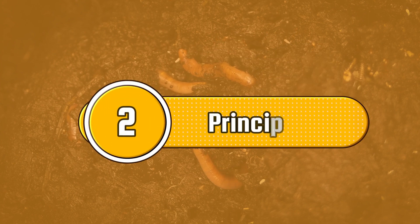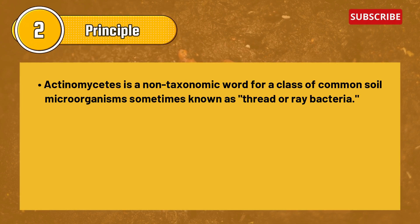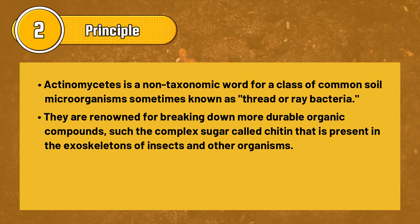Now let's head to the isolation principle of actinomycetes. Actinomycetes is a known taxonomic term for a class of common soil microorganisms, sometimes known as thread or ray bacteria. These are renowned for breaking down more durable organic compounds, such as the complex sugar chitin, which is present in the exoskeletons of insects and other organisms.